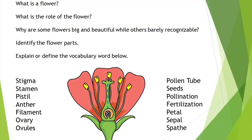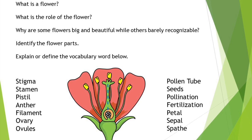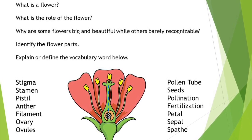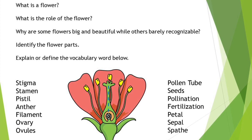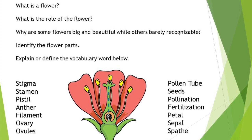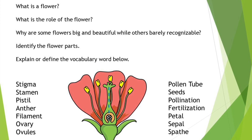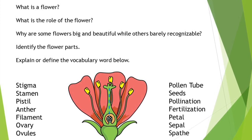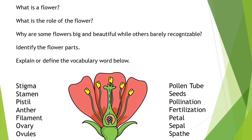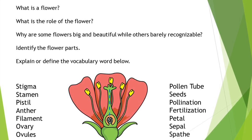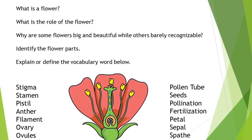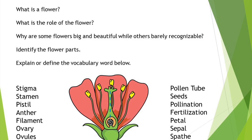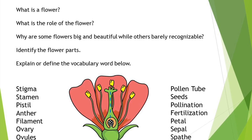At the end of this lesson, you should be able to tell us what a flower is, what is the role of the flower, why are some flowers big and beautiful while others are barely recognizable. You should be able to identify the plant parts and explain or define each of these vocabulary words: the stigma, the stamen, the pistil, the anther, filament, ovary, ovules, pollen tube, seeds, pollination, fertilization, petal, sepal, and spaith.